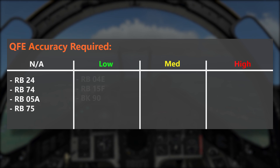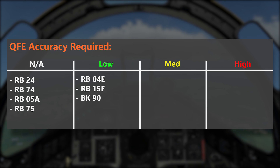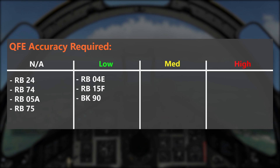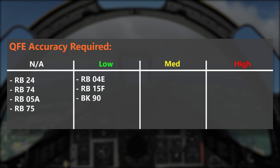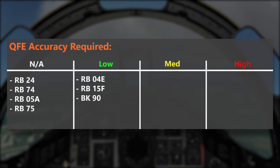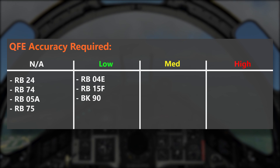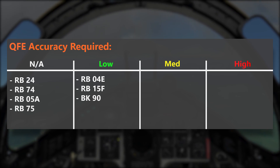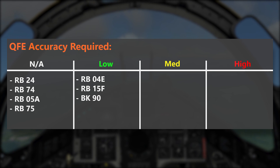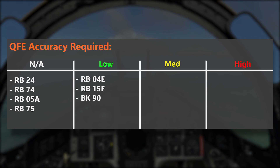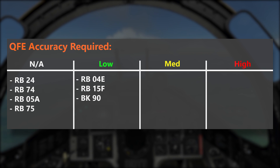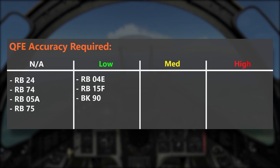The RB04E, the RB15F, and the BK90 need a somewhat accurate or low accuracy QFE setting. While all those weapons have internal radar altimeters that help the weapon navigate at the correct altitude towards the target, a somewhat correct QFE setting is required for launch permission. If you are not within the right launch altitude as determined by the normal altimeter, the weapons will not release. So if you engage a target at a higher altitude and have the wrong QFE set, you will not be able to release those weapons. For the RB04E and RB15F where the target is at sea level, you can also set the QNH, because QNH and QFE at sea level are the same thing — both measure altitude to sea level.